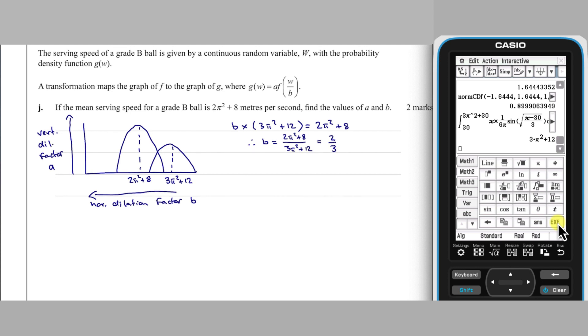As F and G are both probability density functions, then the dilations need to preserve the area under the curve. For this reason, A times B equals 1. This means that A equals 1 over 2 over 3, which is 3 over 2.